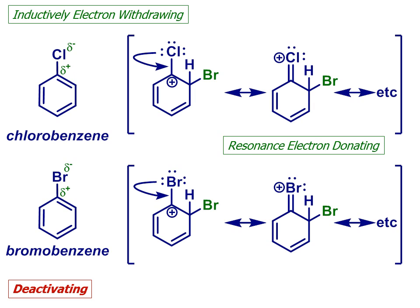This means that substitution at an ortho or para position offers a lower energy pathway than meta-substitution, for the same reasons as we saw with the OH or NH2 groups in phenol and aniline earlier. So halogen substituents are deactivating due to inductive effects, but ortho-para-directing as a result of resonance.